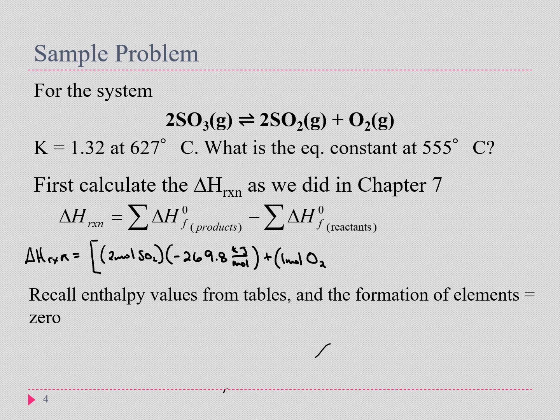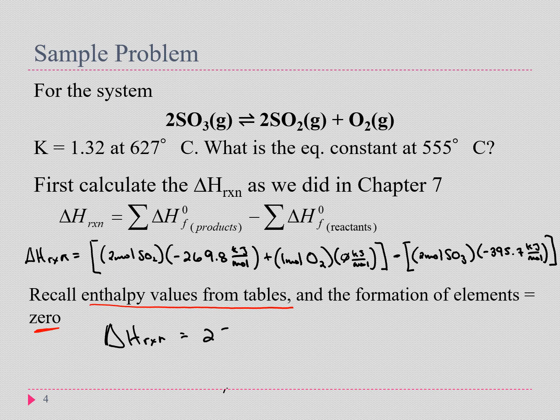I can find that—recall enthalpy values for an element, it's going to be zero kilojoules per mole. Then we're going to take all of that and subtract off my reactants: two moles of sulfur trioxide, which is negative 395.7 kilojoules per mole. The delta H of reaction for this is going to be equal to positive 251.8 kilojoules.